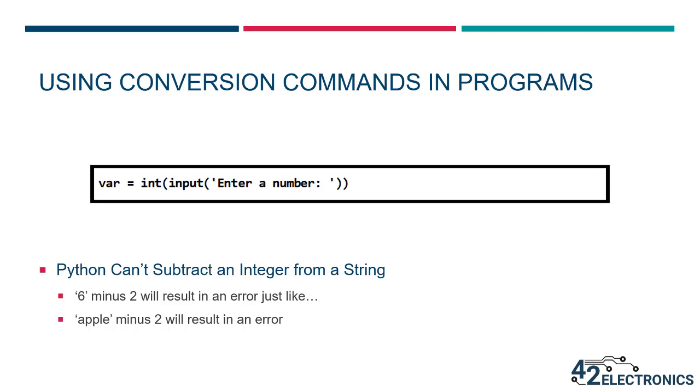Now, when you're writing code, the conversions we've been discussing can happen within a single line of code. For example, in lesson A13, you use this statement to bring in user input as an integer. Normally, the input command will bring in any value entered as a string, even numeric values. The problem with this is you can't perform math operations on a string.